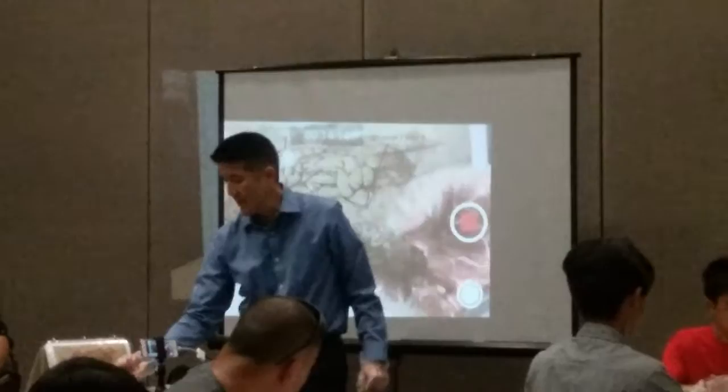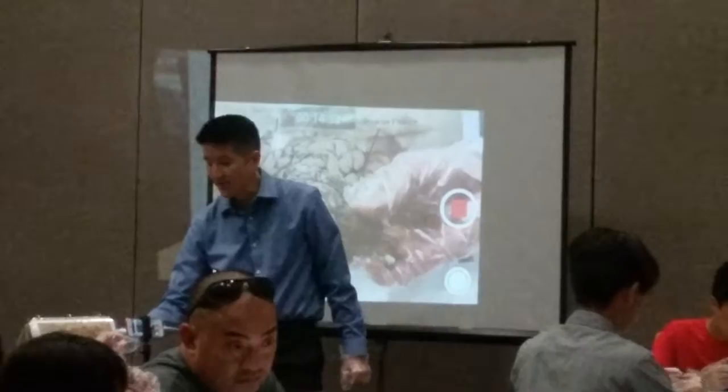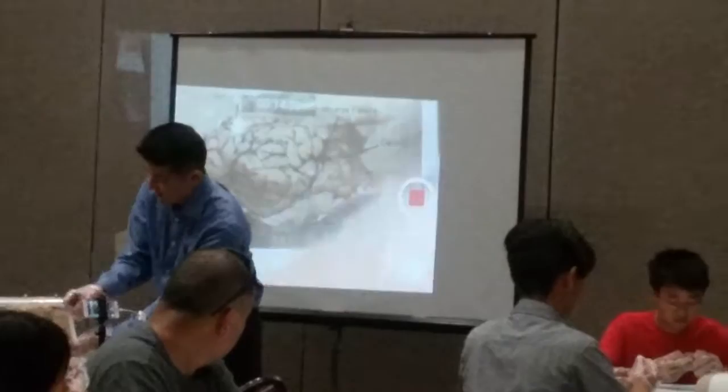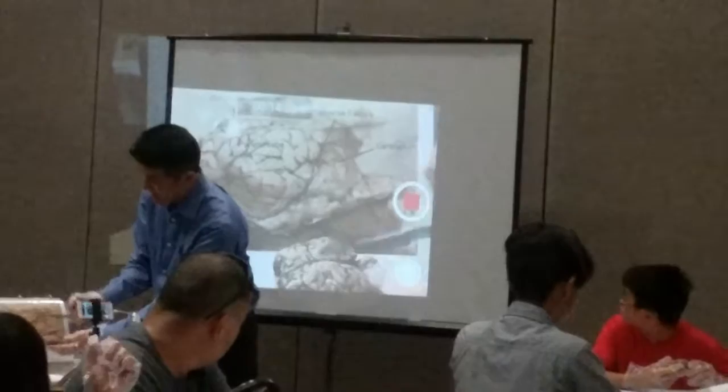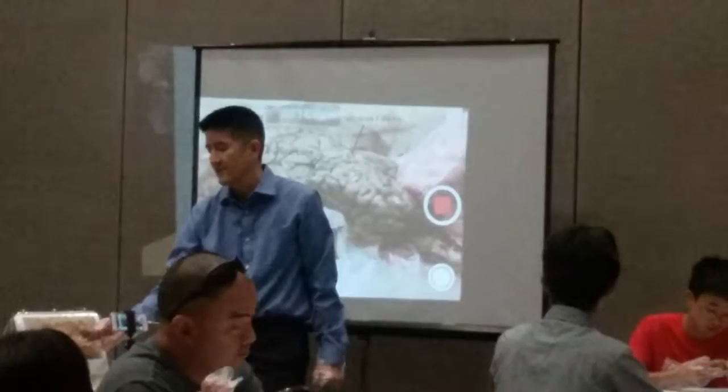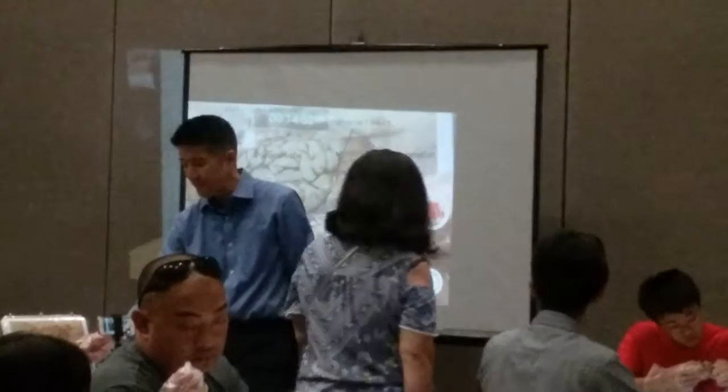If you look at the brain surface, you can see some veins on the surface. The veins are mostly located in the creases between the ridges. The ridges are called gyri — singular is gyrus. So this one here is the superior frontal gyrus, the middle frontal gyrus, the inferior frontal gyrus. The creases in between are called the sulci — that's plural for sulcus. We use this terminology because when you do surgery, there are different things you expect to find in different parts of the brain.